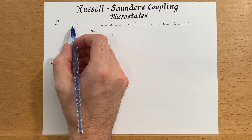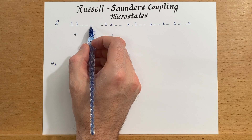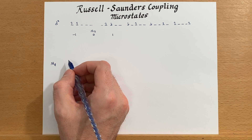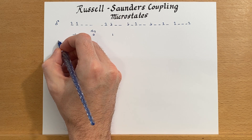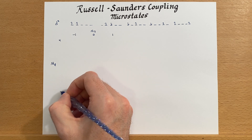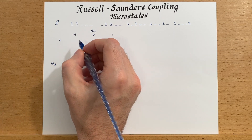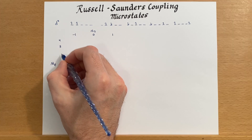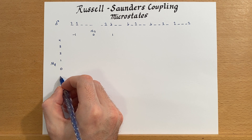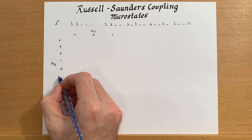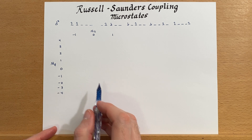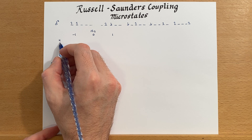On the other axis we'll track the m_l combinations — the orbital angular momentum. For a d orbital, we could have two electrons both in the m_l = +2 orbital, so that would make the total m_l a maximum value of four. Then we count down to −4, covering all combinations of m_l: 4, 3, 2, 1, 0, −1, −2, −3, −4.